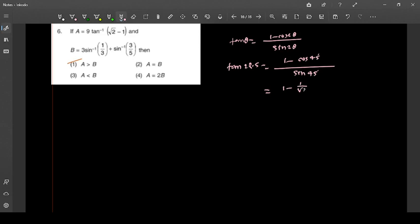That's 1 minus 1 by root 2 divided by 1 by root 2, which equals root 2 minus 1. So tan 22.5 degree equals root 2 minus 1.